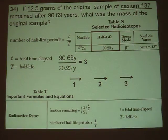So if 12.5 grams remains, that will be the last value that we end up with. So we would need to work it backwards to find the mass of the original sample.